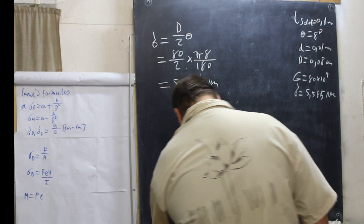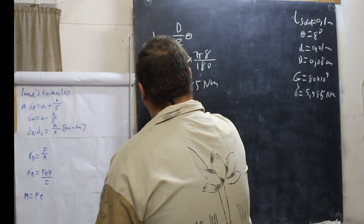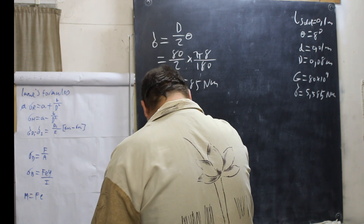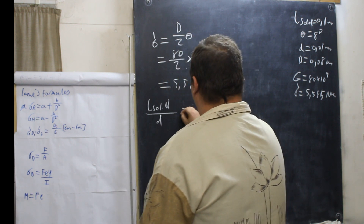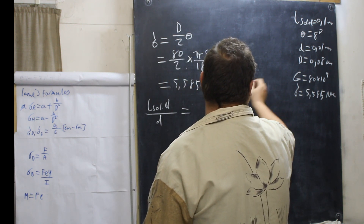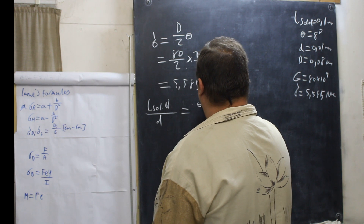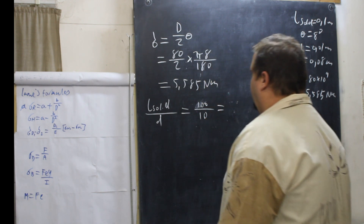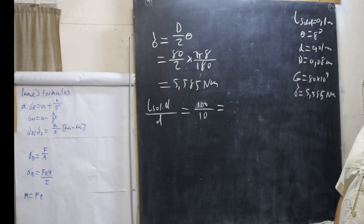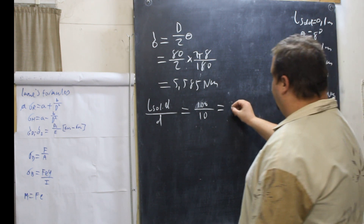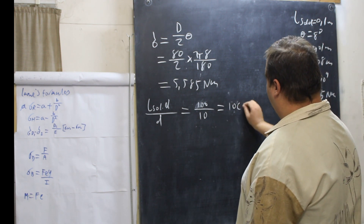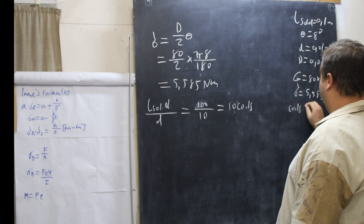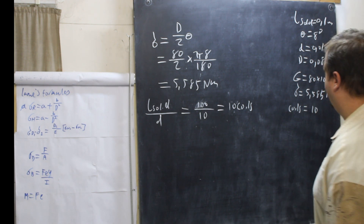Now we calculate the number of coils: n = L_solid / small d = 100 / 10 = 10. We use millimeter values here because we want a dimensionless count. So the number of coils is 10.